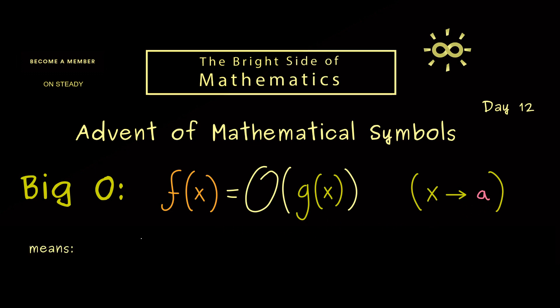Now of course this explanation that f does not grow stronger than g can be put into a formula where we use absolute values. So you would say the absolute value of f is always less or equal than a fixed constant M times the absolute value of g.